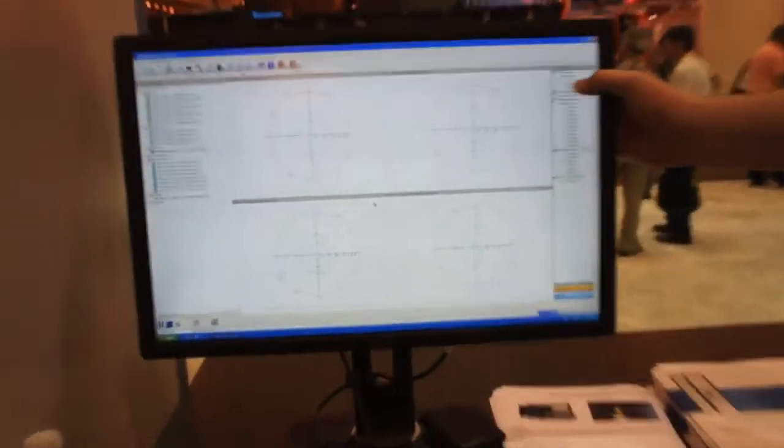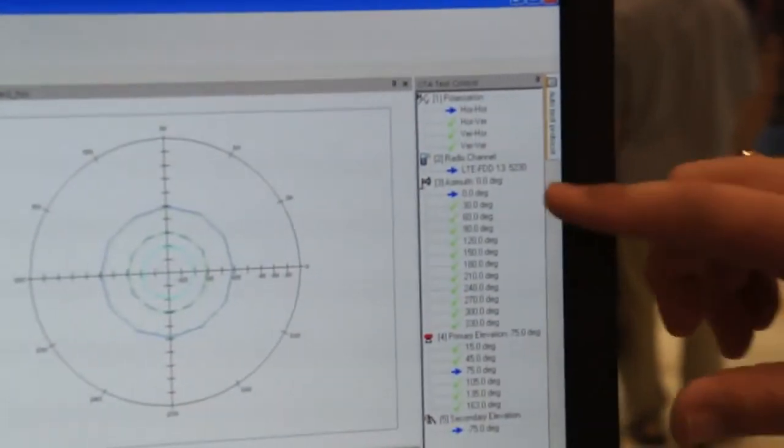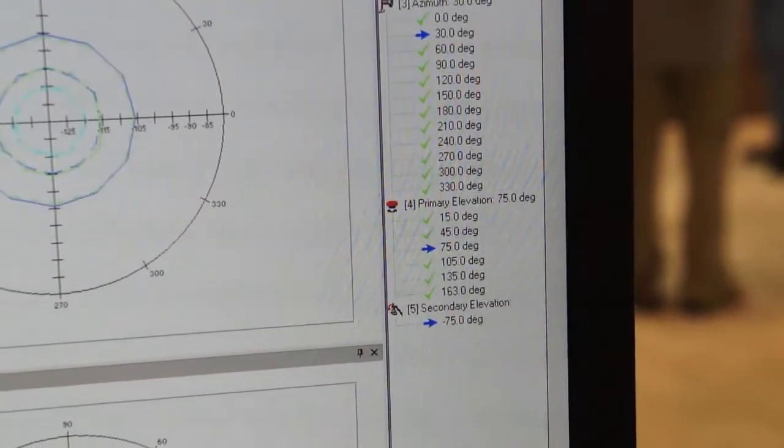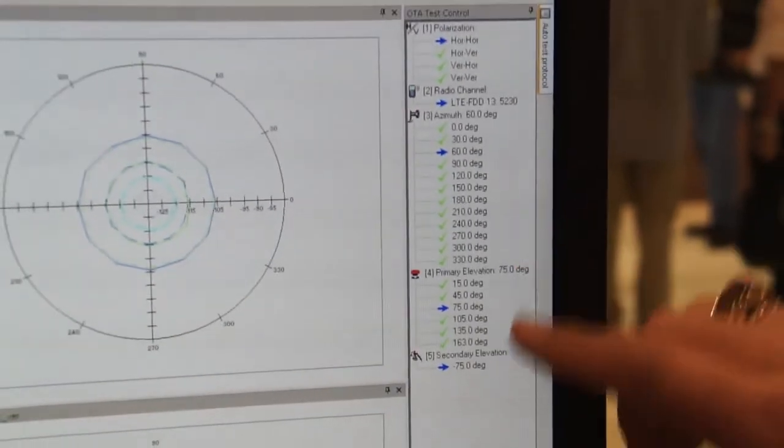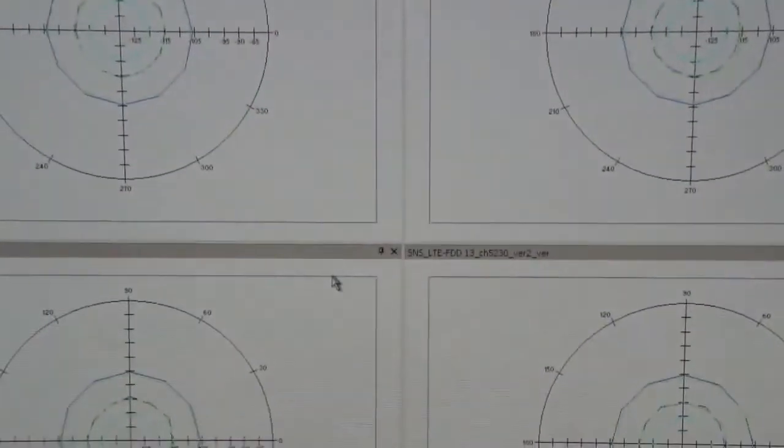So do you have a report up we can go look at? The blue arrow is telling us where we are in the measurement. We can see our azimuth, which is the pedestal, and then these would be the elevation. These would be our theta positioners. And we can see the primary and the secondary.